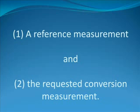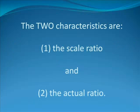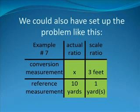What are the two things that are being compared? A reference measurement and the requested conversion measurement. The unknown is associated with the requested conversion measurement. The characteristics are the scale ratio and the actual ratio. On your screen, you see how this problem should be set up in tic-tac-toe format.